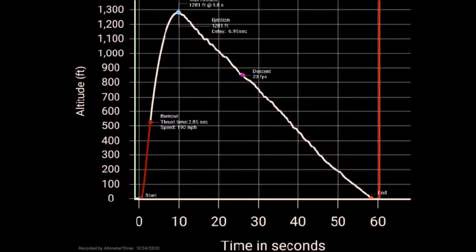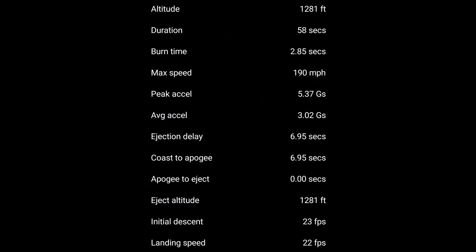So here is what the JollyLogic Altimeter 3 says about the flight. Peak altitude, 1,281 feet. Max speed, 190 miles per hour. Peak acceleration, 5.37 Gs.